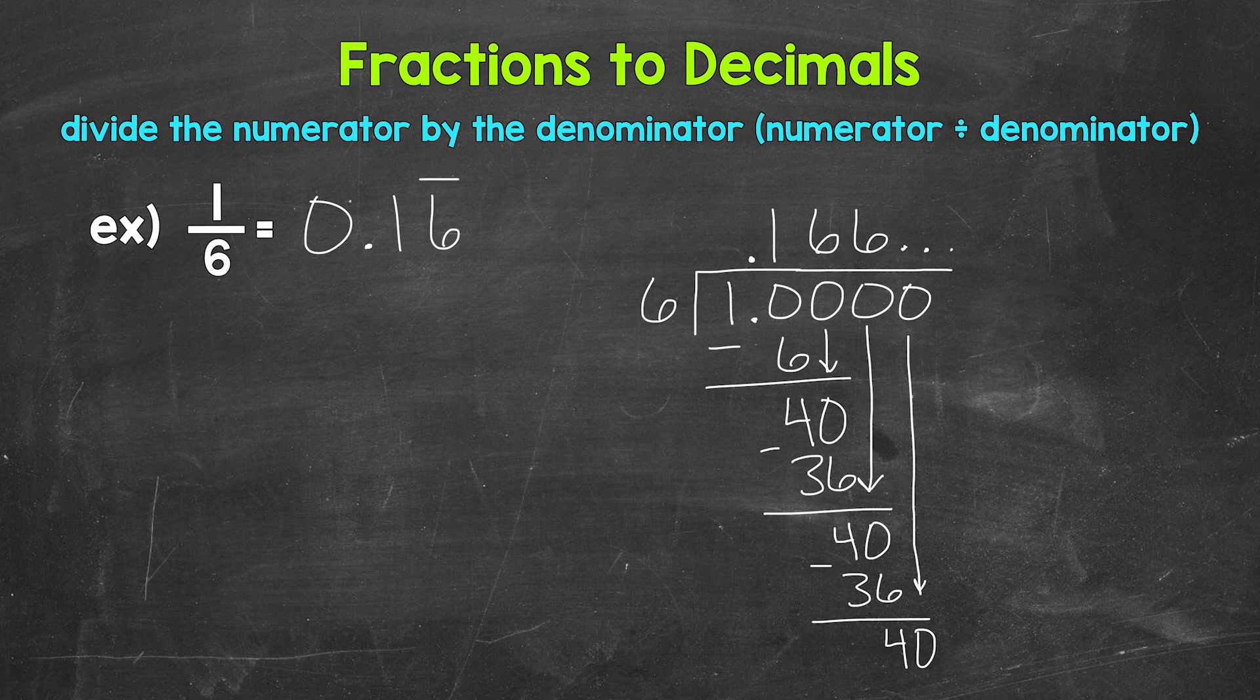So we can stop there and write this decimal as 0.16 and then put a bar above the 6 to show that that digit repeats. So 1 sixth equals 0.16 and the 6 is repeating.